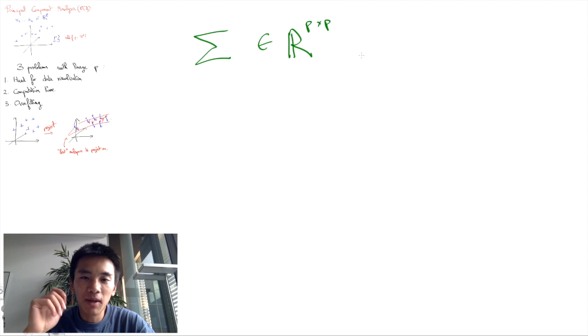So sigma is a matrix p by p, where sigma_ij tells us how coordinate i varies with respect to coordinate j.